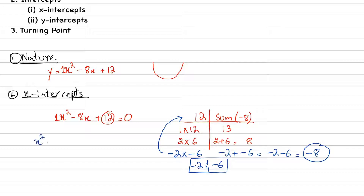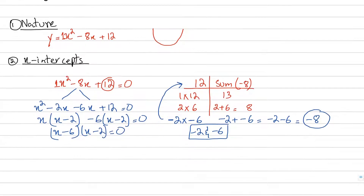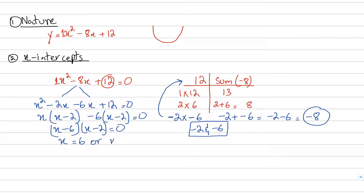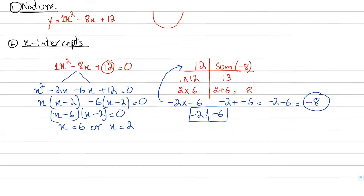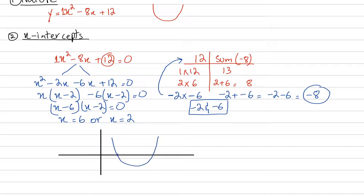Now let's break the middle term: x squared minus 2x minus 6x plus 12 equals 0. Making pairs: x is common in the first pair giving x(x minus 2), and minus 6 is common in the second pair giving minus 6(x minus 2). So (x minus 6)(x minus 2) equals 0. This means x equals 6 or x equals 2. These are our x-intercepts — the values where the curve crosses the x-axis at x = 2 and x = 6.